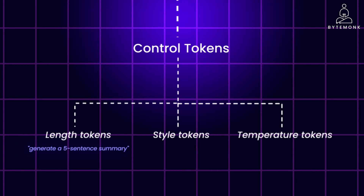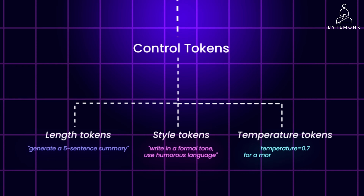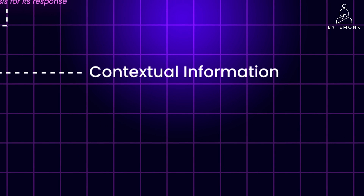Style tokens guide the tone and formality of the response — for example, 'write in a formal tone' or 'use humorous language.' Temperature tokens influence the creativity and randomness of the output — for example, a temperature of 0.7 for a more factual response, or a temperature of 1.0 for a more creative response. Contextual information includes any additional information provided to the LLM that helps it understand the context of the input text, such as background information with relevant details about a topic or situation.